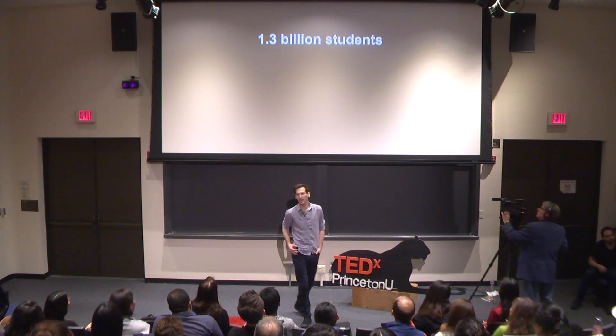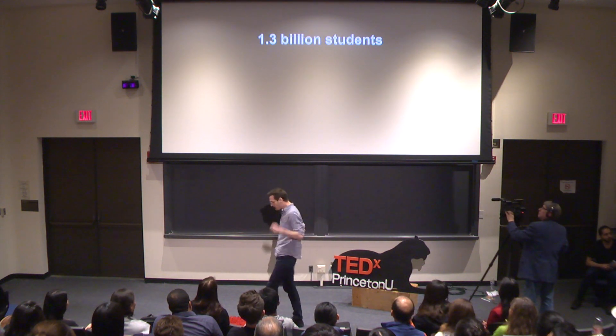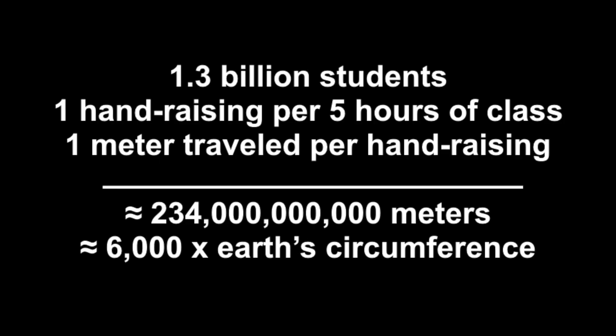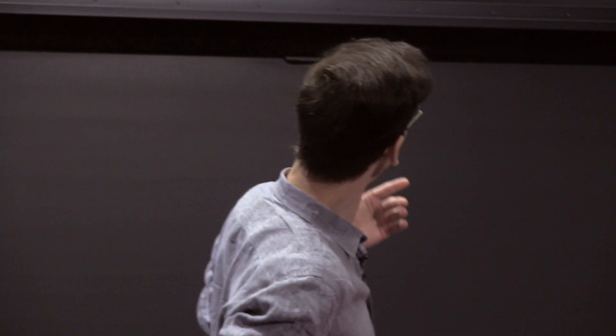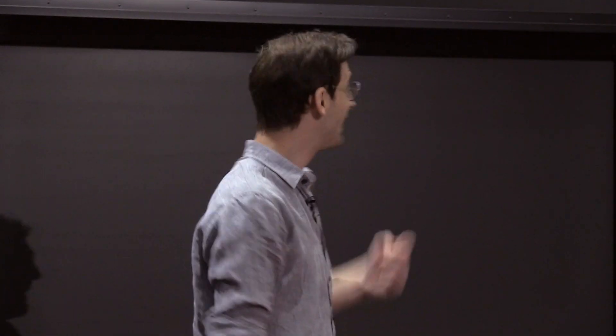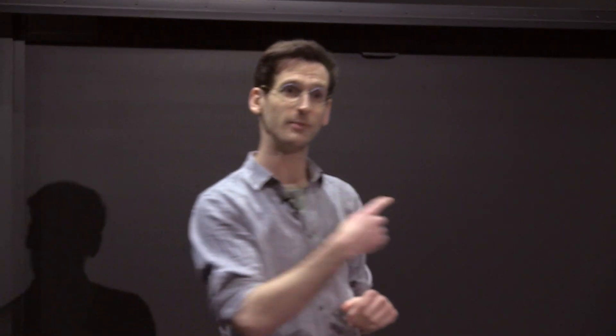I want to think about how we can do that better. Just to give you a sense of the scale: it's about 1.3 billion students in the world. If each one of them raises their hand about once every five hours of instruction — about half a meter up and half a meter down — you can calculate that in an average year the world's students move their hands a distance of 234 billion meters, which is 6,000 times around the earth or one and a half times the distance to the sun. It actually takes about 100 billion seconds or 40 human lifetimes every year just for students dangling their hands. That's a really conservative estimate.